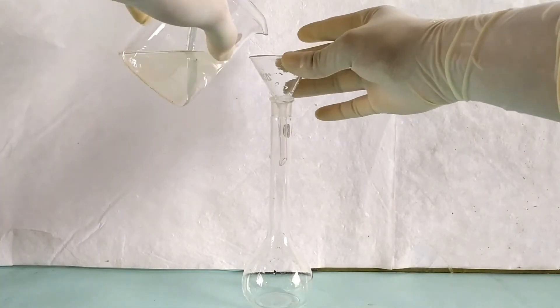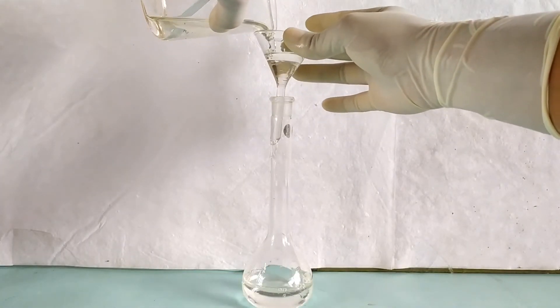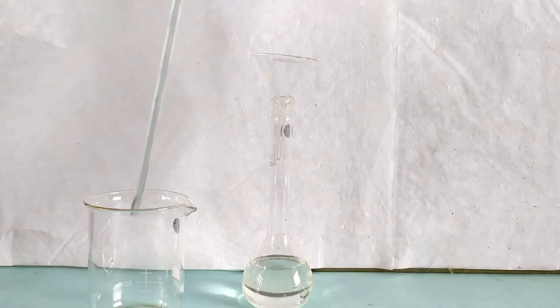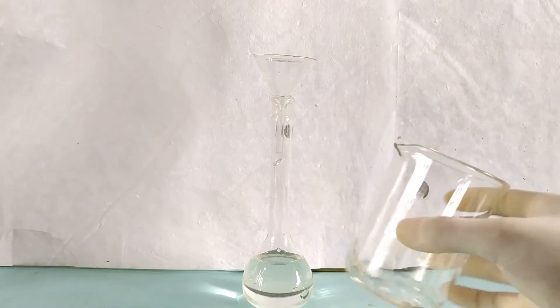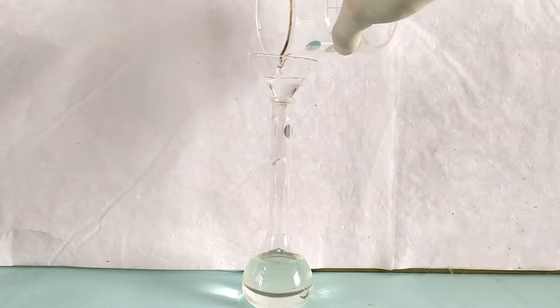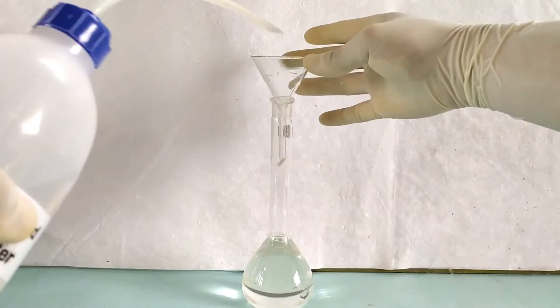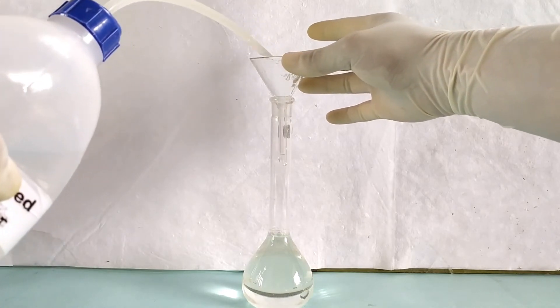Transfer the contents of the beaker into a 100 ml volumetric flask or a graduated cylinder. Rinse the stirring rod, the funnel and the beaker using small amounts of distilled water while making sure that the final volume after rinsing does not exceed 100 ml.